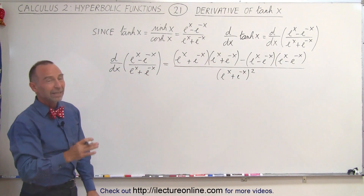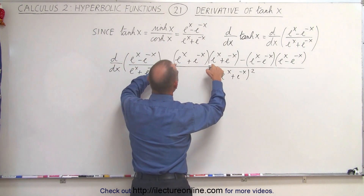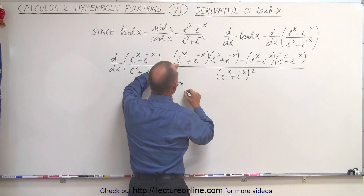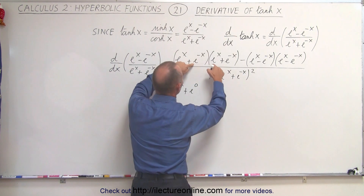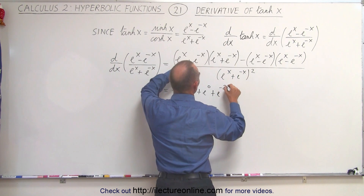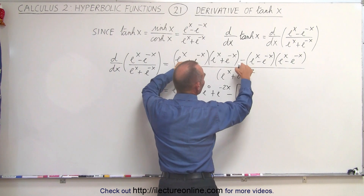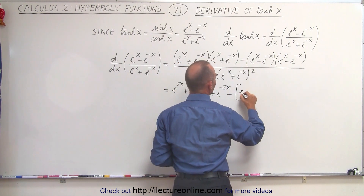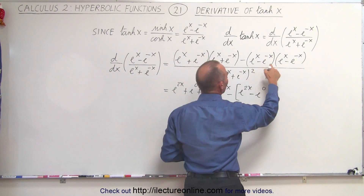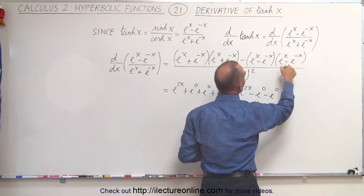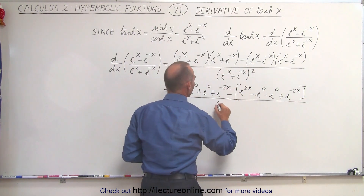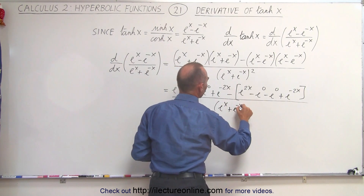Now we need to multiply everything in the numerator. Multiplying these two together gives e to the 2x; those two give plus e to the zero; those two give plus e to the zero; and those two give plus e to the minus 2x. Then we subtract — because of the negative sign — everything from the second group: e to the 2x, minus e to the zero, minus e to the zero, and plus e to the minus 2x. The whole thing is still divided by (e to the x plus e to the minus x) squared.